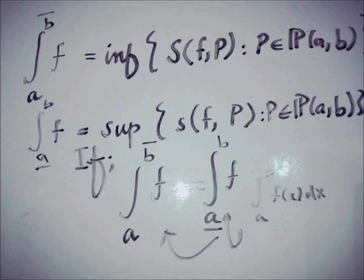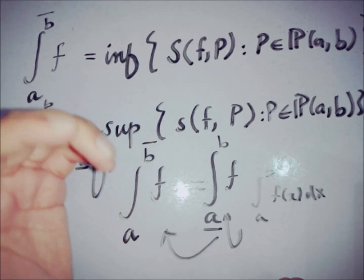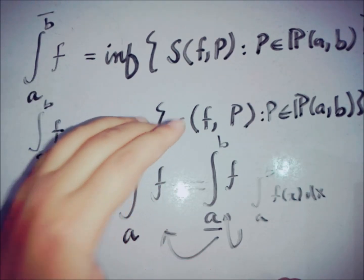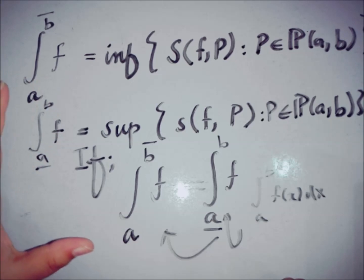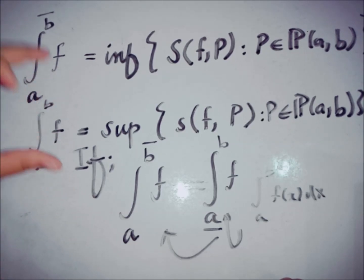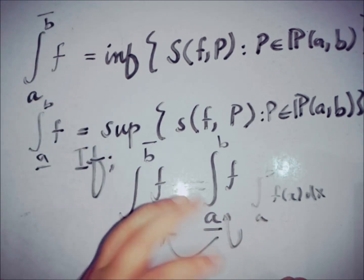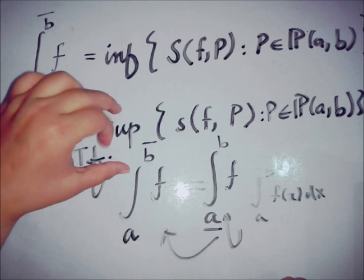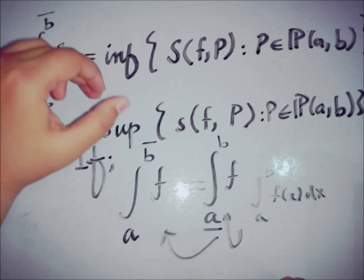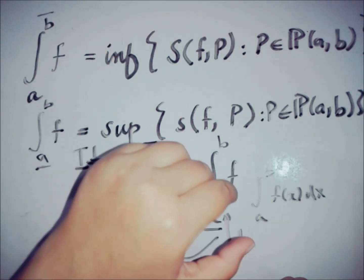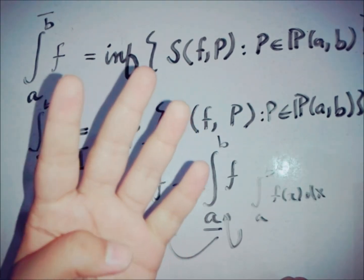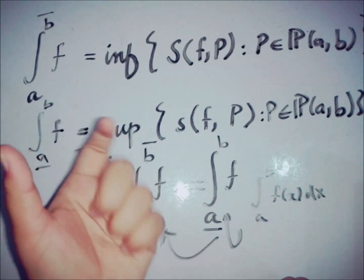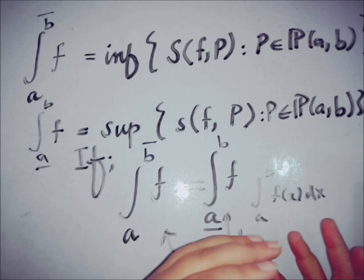There is a hidden relation between every Riemann upper integral and every Riemann lower integral: for every partition, the Riemann upper integral is always greater than or equal to the Riemann lower integral. This relation is embedded in the definitions of the partitions, the supremum and infimum, and the Riemann lower and upper sums.